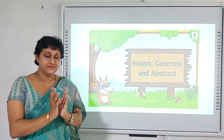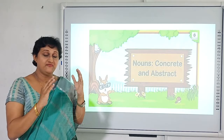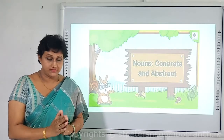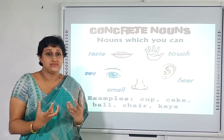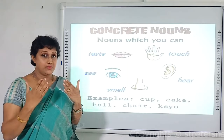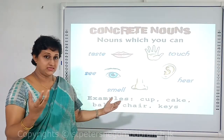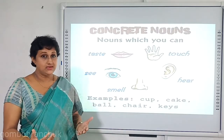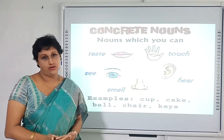Before moving on to all the classifications, I want to cover two first: concrete and abstract nouns. Concrete nouns are nouns which are identified through the five senses — things we can touch, hear, taste, smell, and see. Examples include a cup, which you can touch and feel; cake, which you can smell or taste; and keys, shears, and gauze, which you can touch.